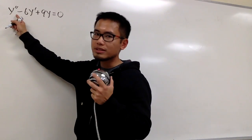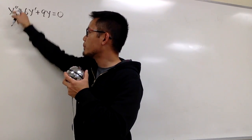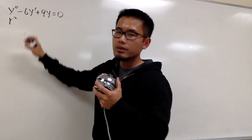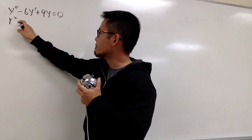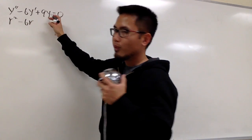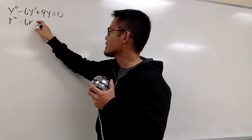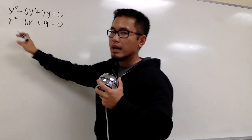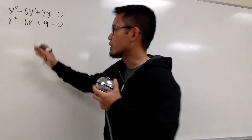Just like the previous video, when you see y'', this corresponds to r squared. And y' corresponds to r, so we have minus 6r. And y corresponds to no r, so we have just plus 9, equal to 0. And for this, we can just go ahead and solve it.